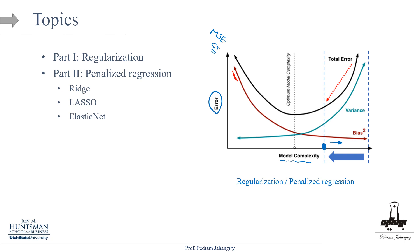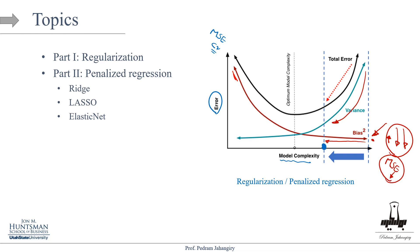The idea of regularization is: imagine we are at a point of high complexity and we make the model a little less complex. By doing that, yes the downside is that model bias is going to increase, but look at what happens to model variance — it's going to decrease a lot. So overall the mean squared error in the test set or cross-validation is going to decrease. In a nutshell: make the model less complex in the hope that error in the test set or cross-validation decreases. Applying this concept to linear regression by adding a penalty gives us penalized regression.